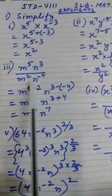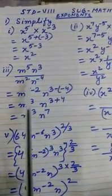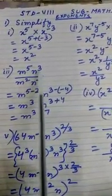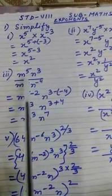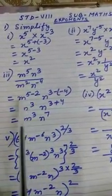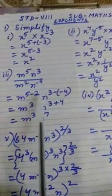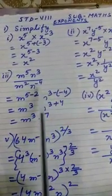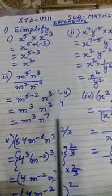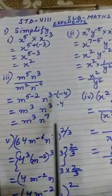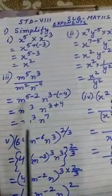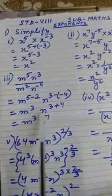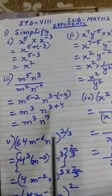Moving on to the third sum: m to the power 5, n to the power 3, divided by m squared, n to the power minus 4. Here division, so we will subtract the powers. Minus 4 is already there and for division the minus sign is there, so minus minus plus. We get m to the power 5 minus 2 equals 3, and n to the power 3 plus 4 equals 7, giving m cubed n to the power 7.